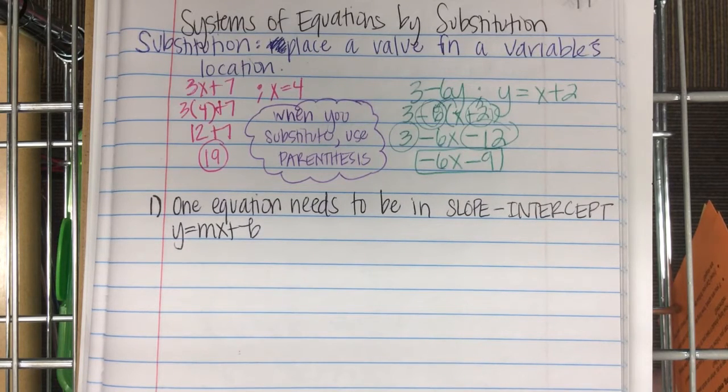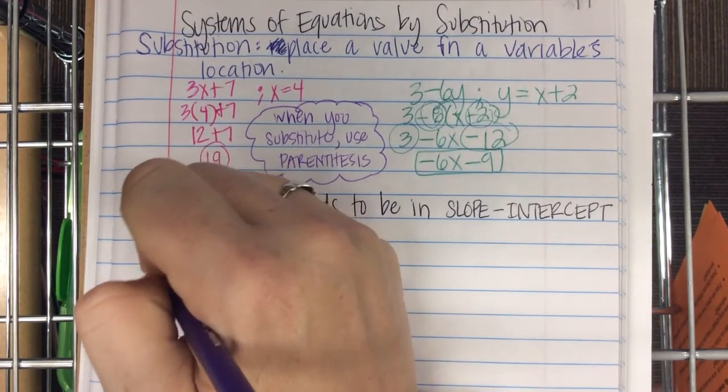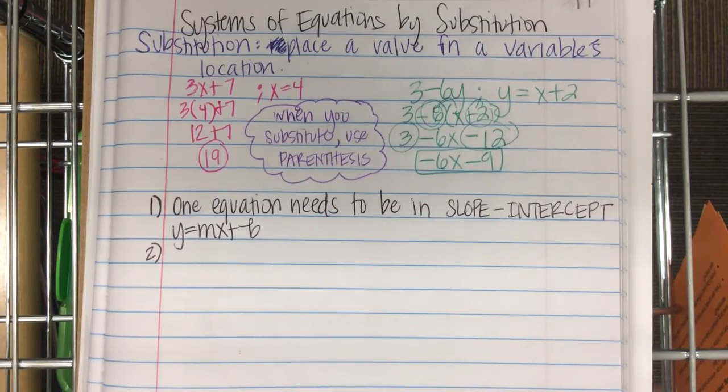Most of the time, that's already there. What if one of them isn't in slope? What if they're both in standard form, what should you do? Pick one to put in the slope intercept. I'd pick the one that doesn't give you any fractions. If you're doing it and you get fractions, I would stop and try the other one. You don't have to. Either one will work.